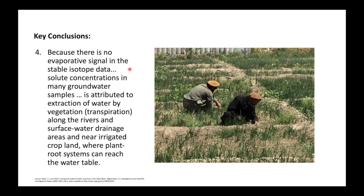They also found no evaporative signal in the stable isotope data. This means the more concentrated groundwater — with a higher amount of solutes — is probably due to transpiration. Plants in irrigated areas and near rivers have been transpiring water, thereby concentrating solutes in the soil zone, which then seeps downward to make groundwater more saline.